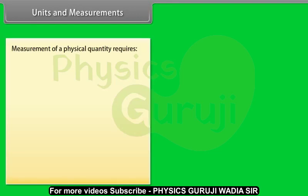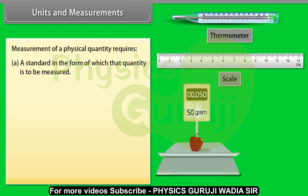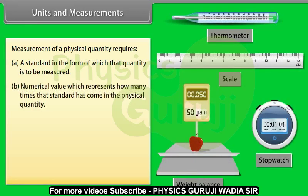Units and measurements. Measurement plays a very vital role in the study of physics. Measurement of a physical quantity requires a standard in the form of which the quantity is to be measured, and a numerical value which represents how many times that standard has come in the physical quantity.